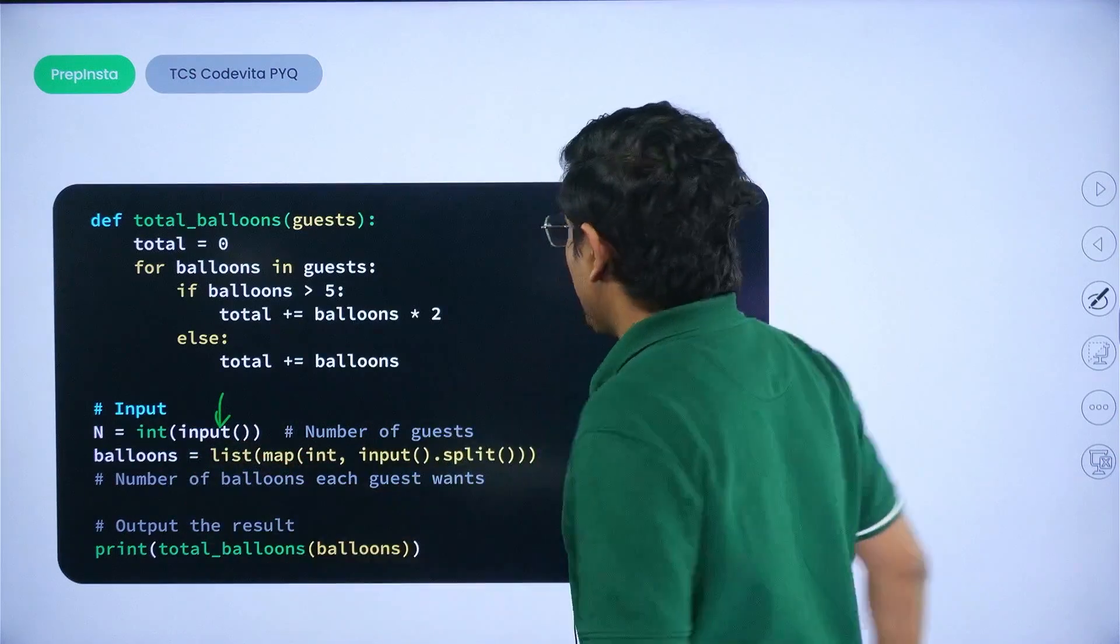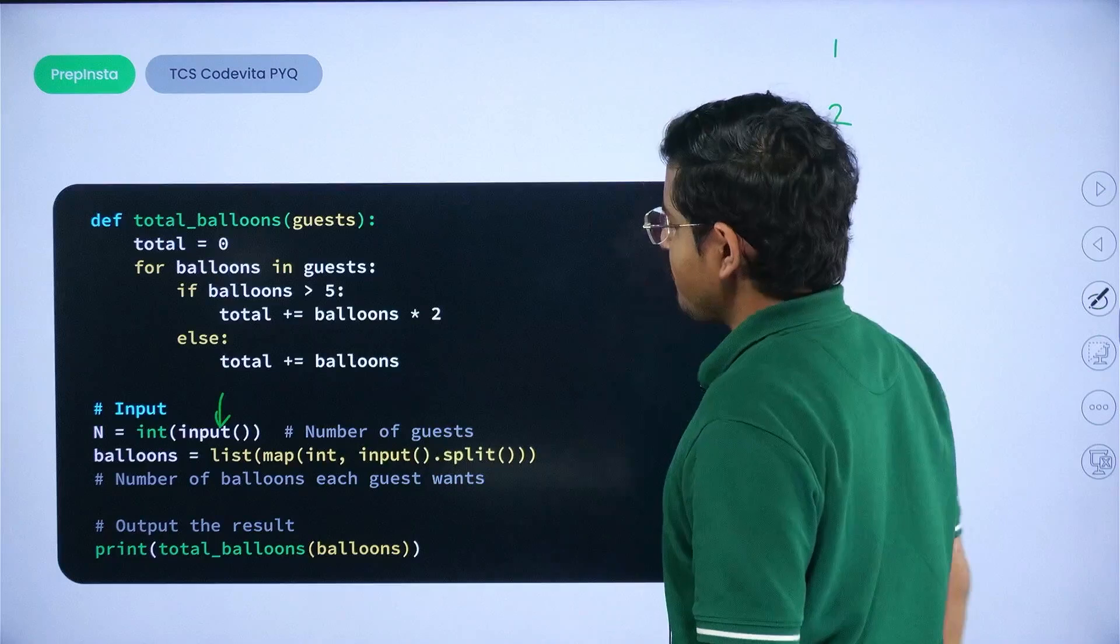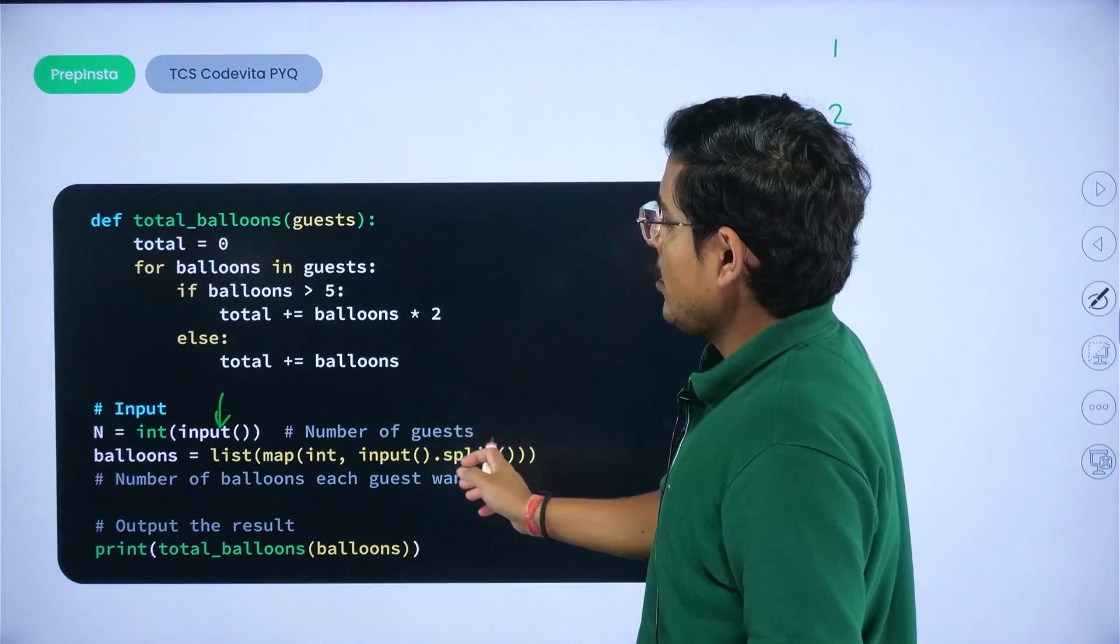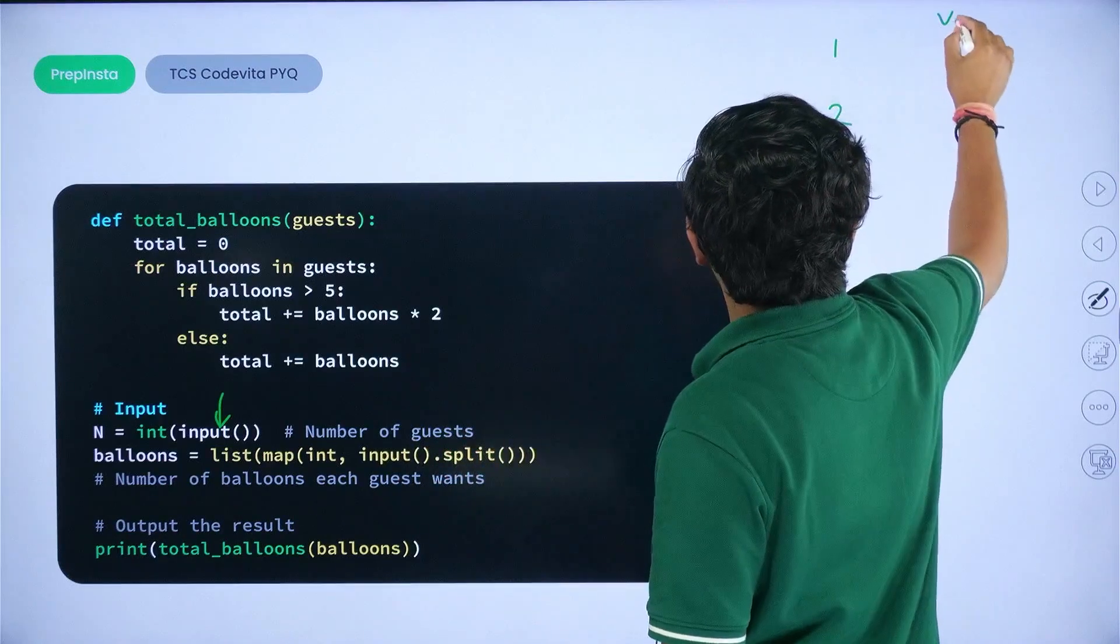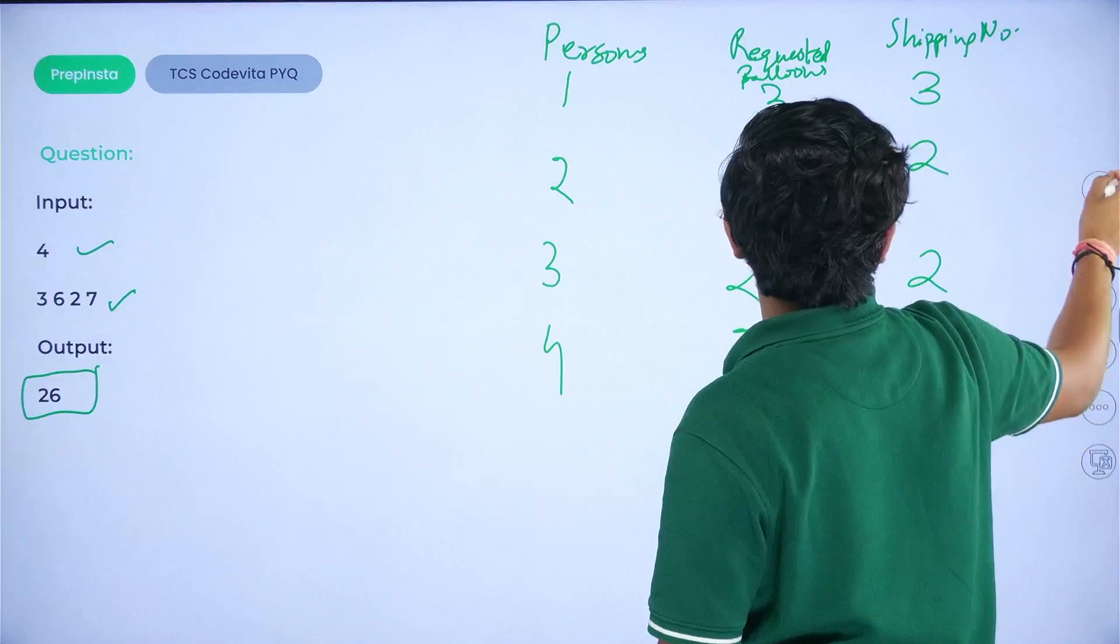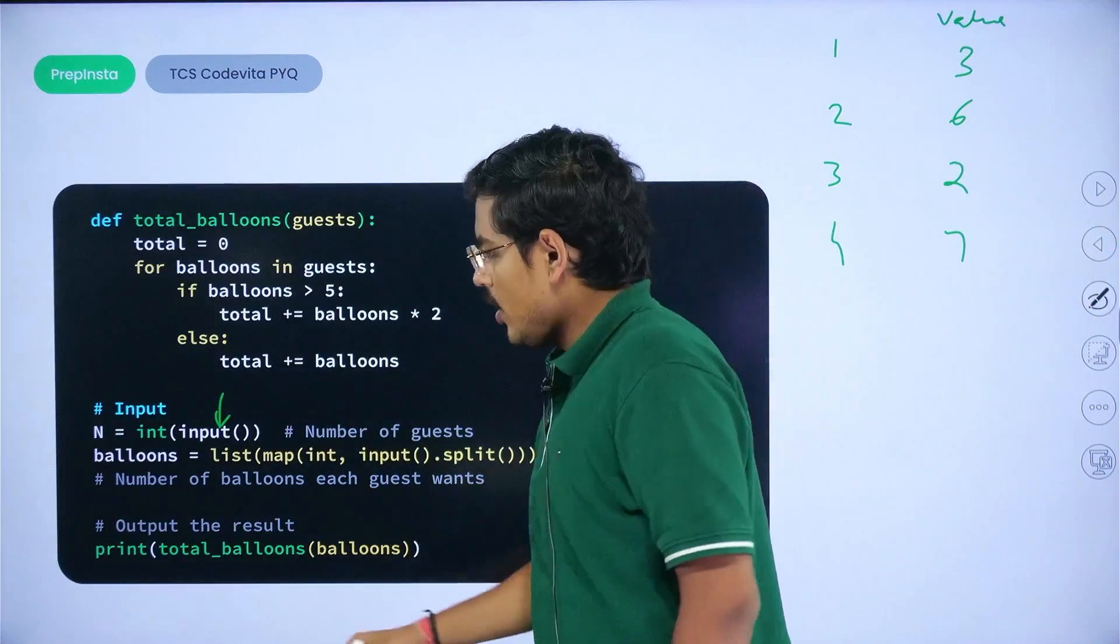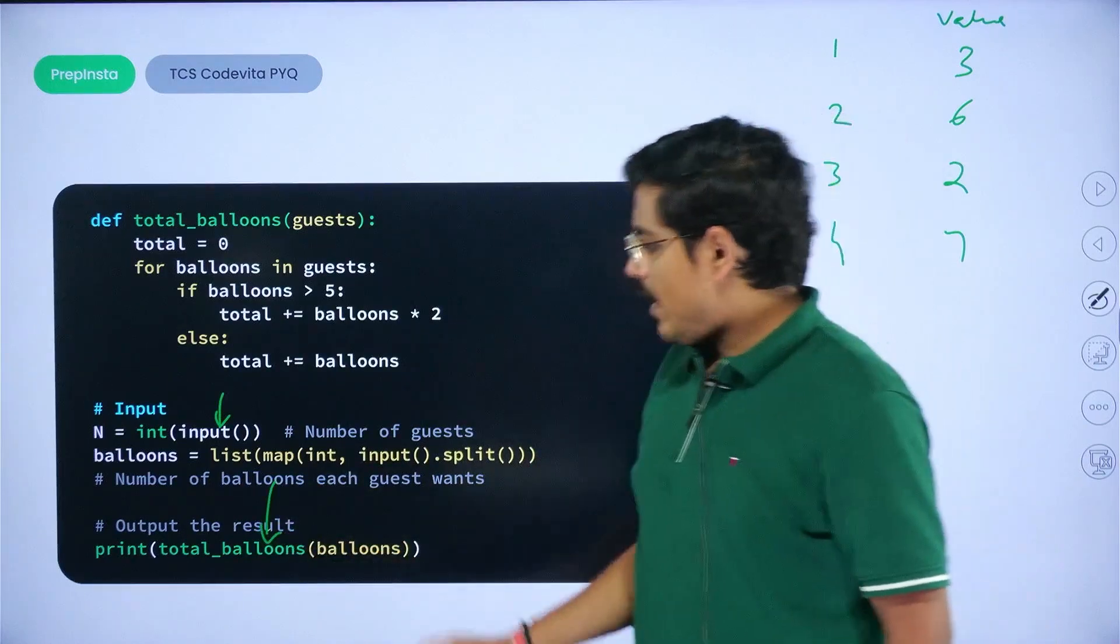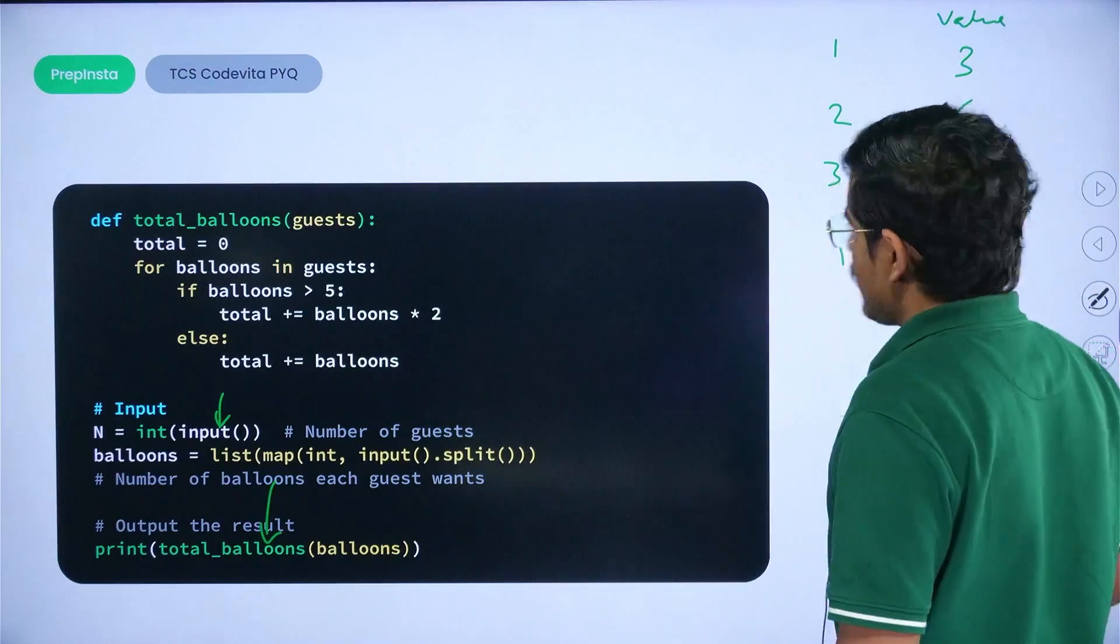So all you need to do is integer input the number of guests, then you would create a hashmap called balloons where you would have, for example, one, two, three, and four. And then all you need to do is store how many number of balloons each guest wants in the value pair. They would be stored. So if I correctly remember, this was three, six, two, and seven. And then you actually pass on this to the total_balloons function.